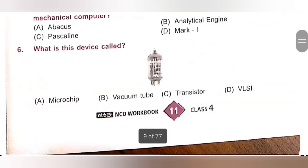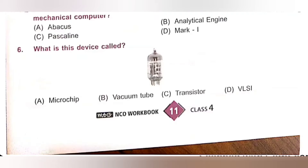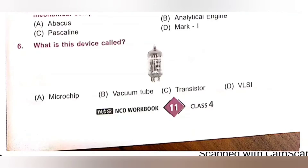Question 6: What is this device called? A. Microchip, B. Vacuum tube, C. Transistor, D. VLSI. The given image is of a vacuum tube, which was used in the first generation of computers. Option B is the correct answer.